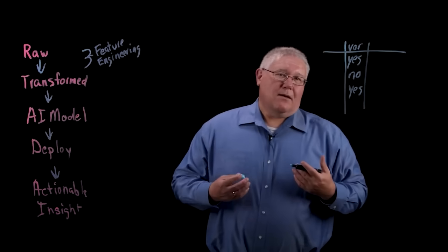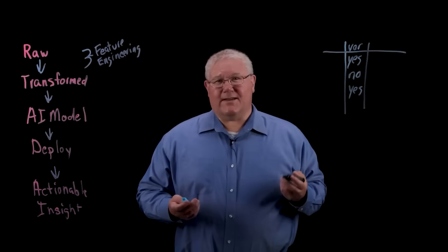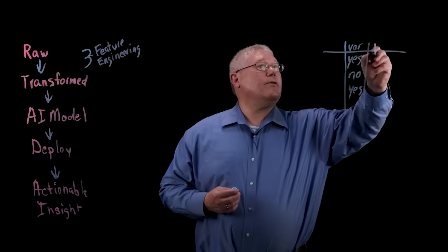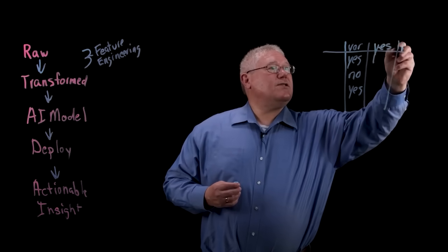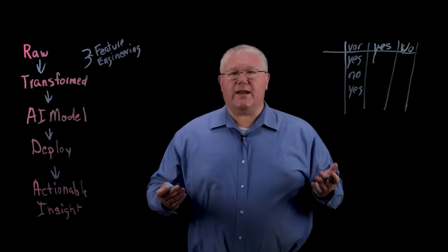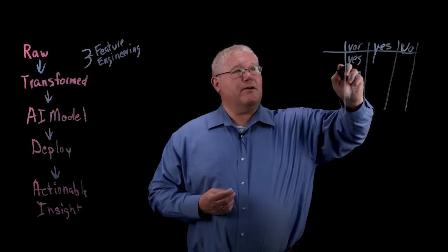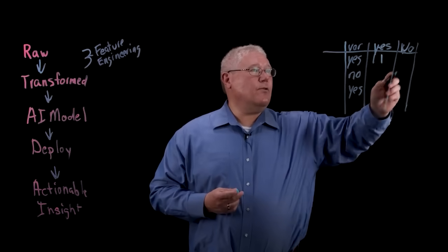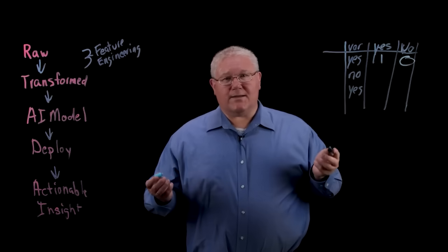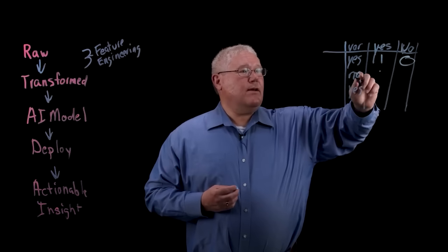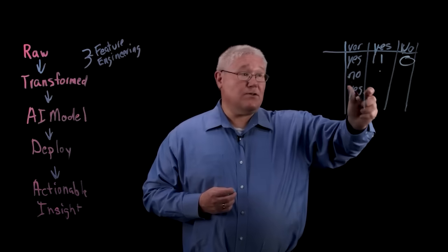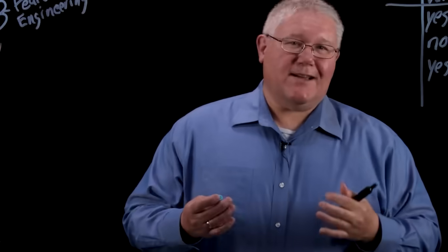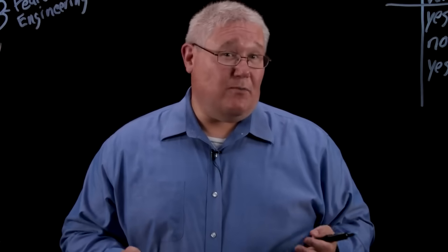Of course, it depends on the model. But a lot of the models that we use really can't handle text information. So one way that we'll transform it so that it's usable by an AI model is we create these things called dummy variables. And a dummy variable is just taking one column of data and splitting it into multiple columns. So the original variable was yes. So the new column we've labeled yes is going to be one. The new column that we've labeled no is going to be zero. Likewise, the row that has a no value in the first column is going to be a zero for yes and a one for no. So the idea is you take the original categorical variable and you spread it into multiple numeric variables.